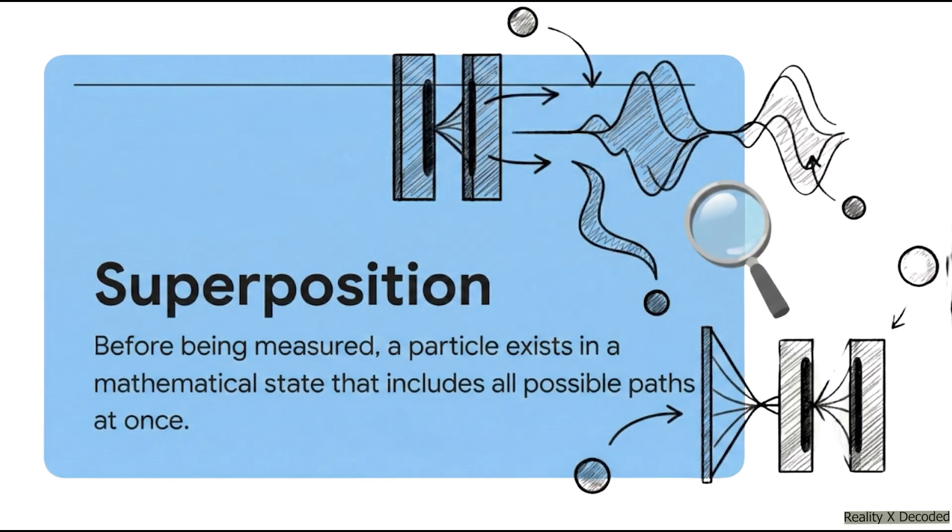The core idea here is something called superposition. What quantum mechanics tells us is that before you measure an electron, it doesn't have one single position. It exists as what we call a wave of possibility. It's a mathematical description that includes all of its potential paths: going through the left slit, the right slit, both, neither, all at the same time.